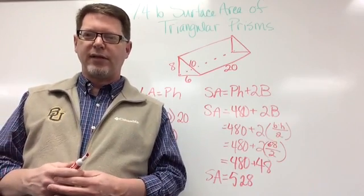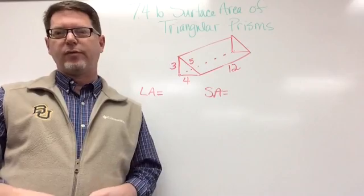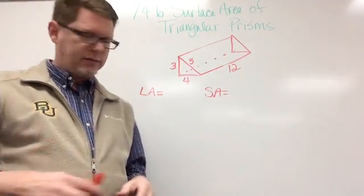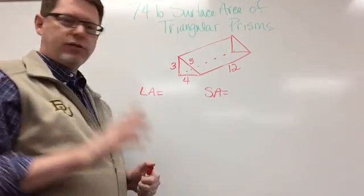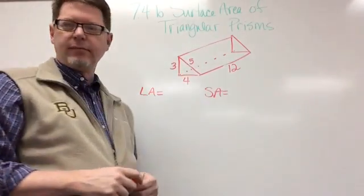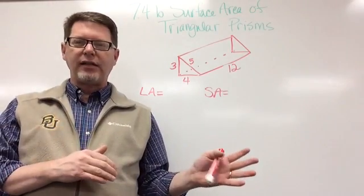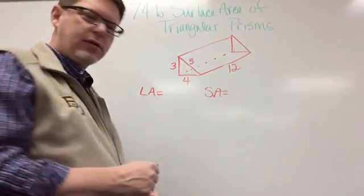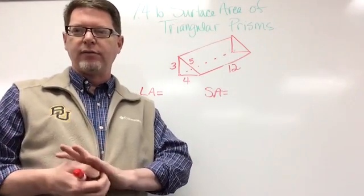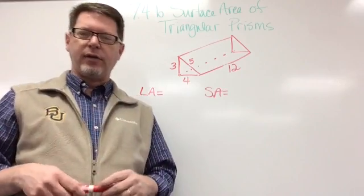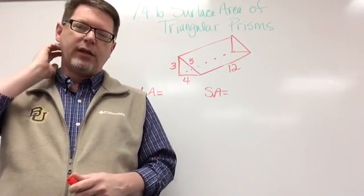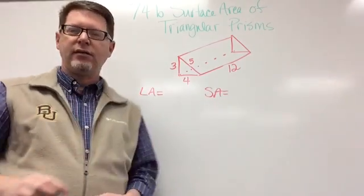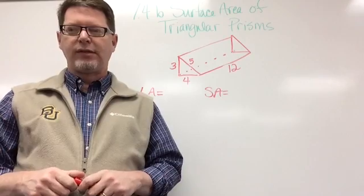Your practice problem is coming up next. I changed all of the measurements on that last triangle we did — here's your triangular prism with the new measurements. Make sure you highlight the triangle so you know what to add up when finding capital P. Once you've found the lateral area and the surface area, take a picture, turn it into Edmodo, and we'll see you later.